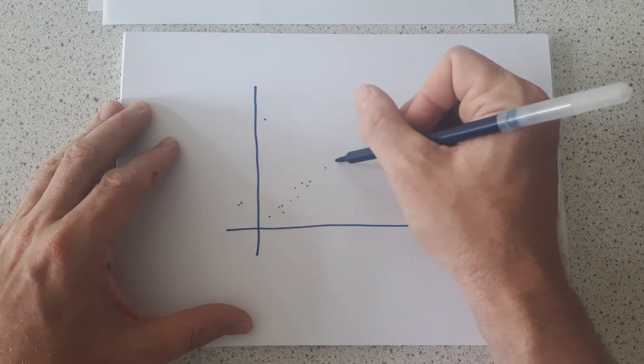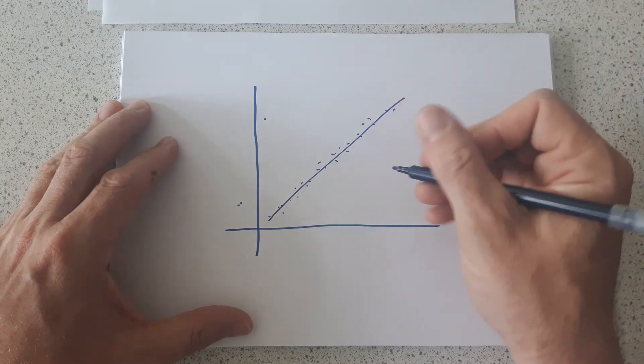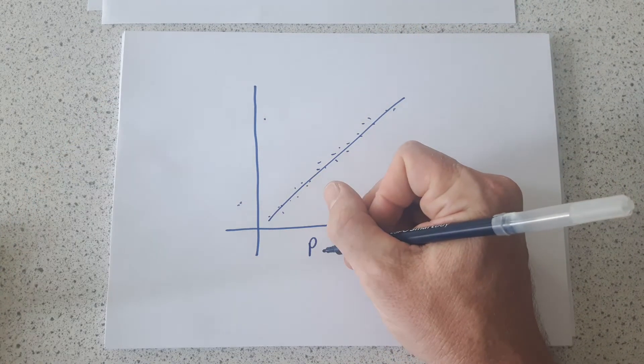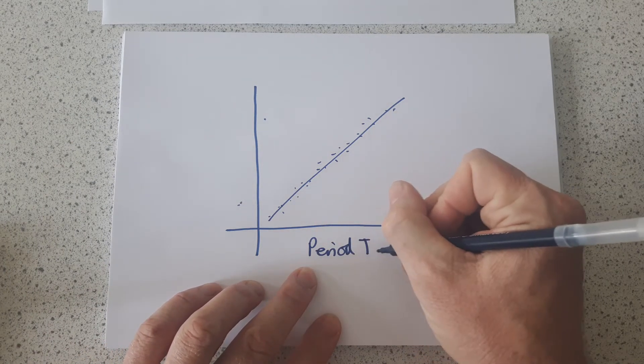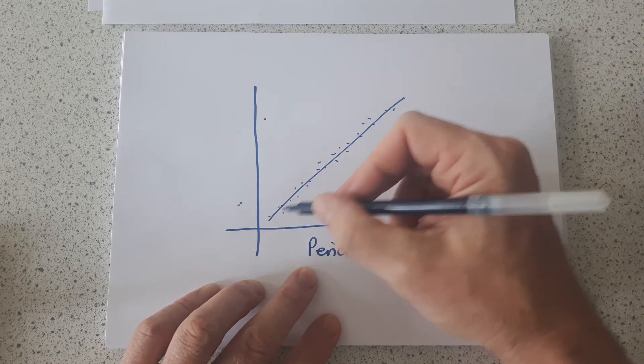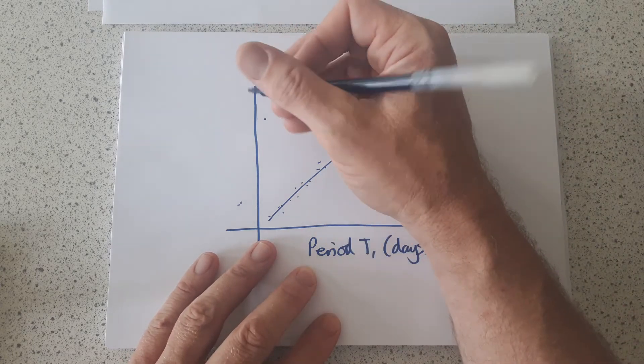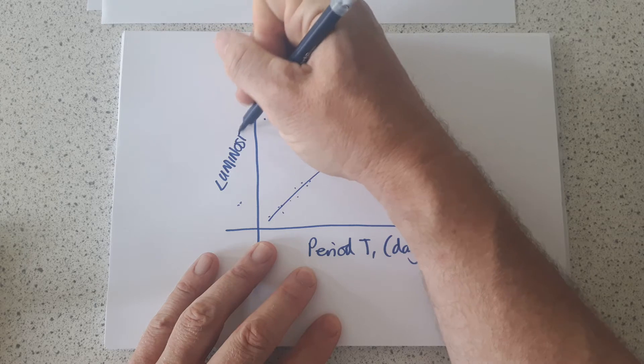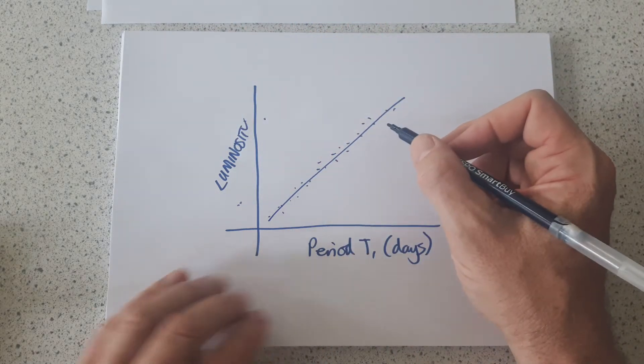So each one of these would be one of her data points. And what she discovered was that the period of luminosity in days was related to the luminosity. Now this scale is not linear. It's a logarithmic scale. That's why it's not a proportional graph.